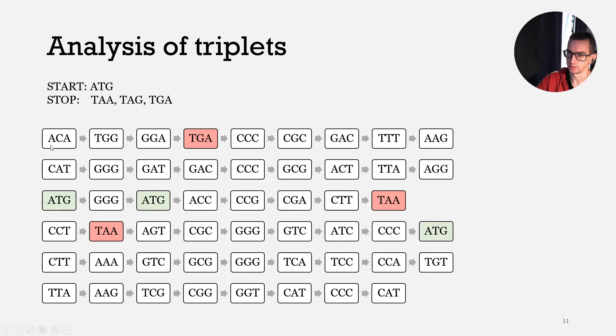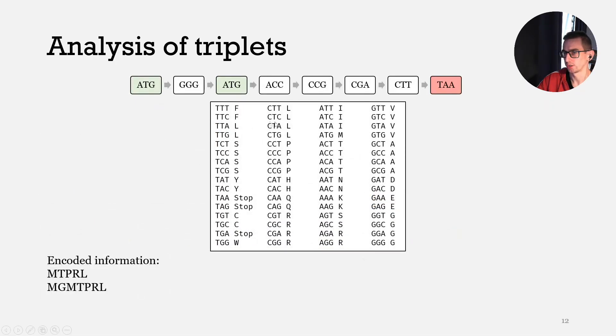Now let's consider just the third line. We can decode this line by our table and get the final result. The result is MTPRL, MGMTPRL. That's all.